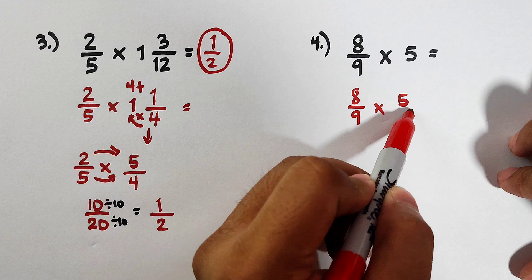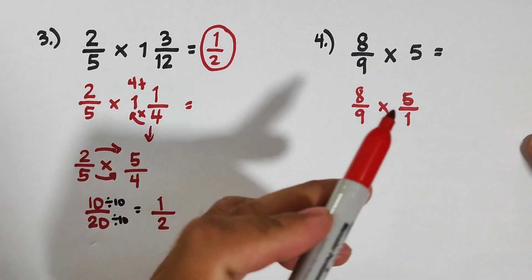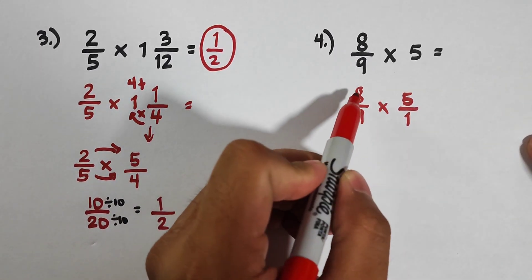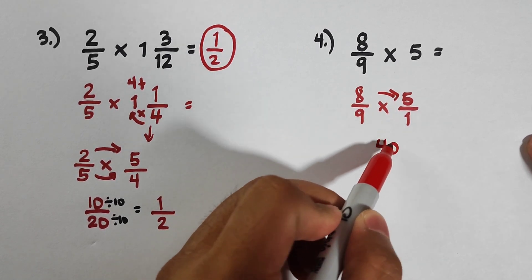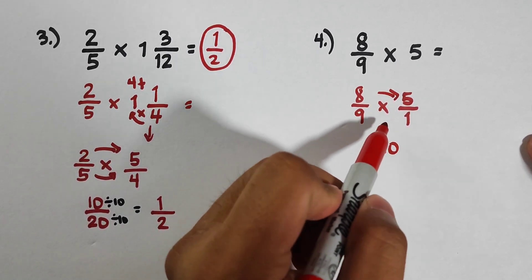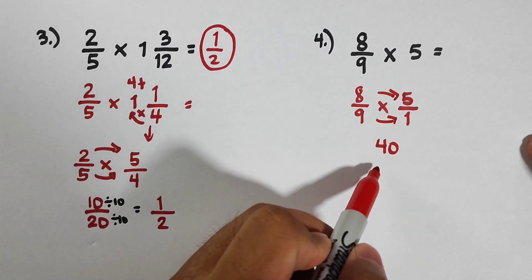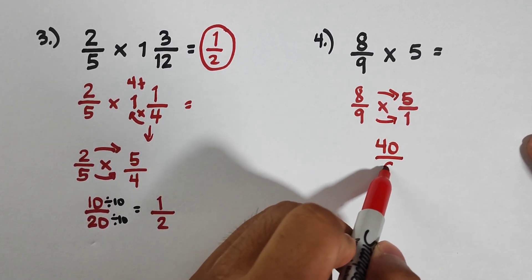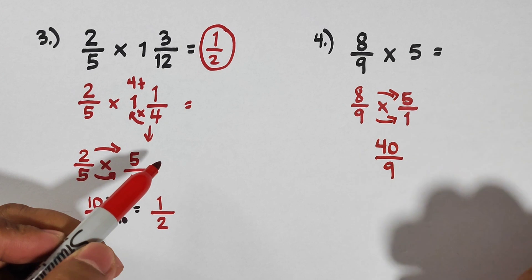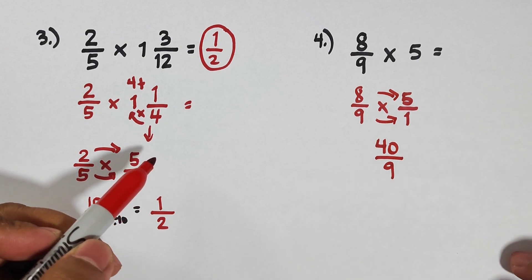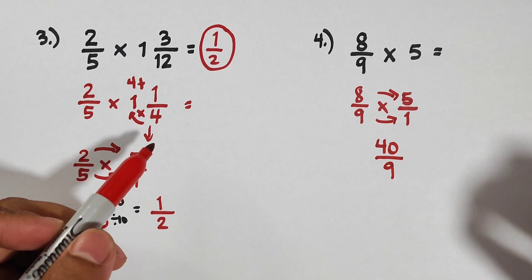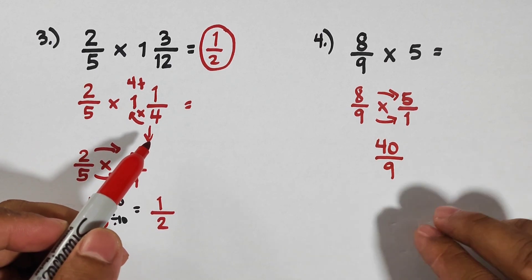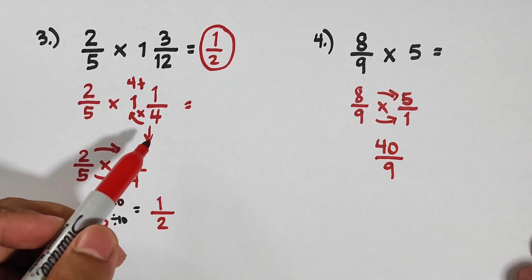So how are we going to do it? Copy 8/9 times this whole number, which can be expressed as a fraction. 5 is equivalent to 5/1. Now we can directly multiply the numerators: 8 times 5, that is equal to 40 over 9 times 1, that is equivalent to 9. As you can see, what we have here is an improper fraction. If your teacher will not allow you to express your final answer in improper fraction, you can convert this into mixed number.